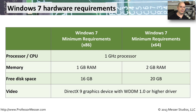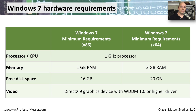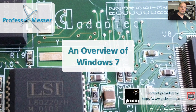The system requirements for Windows 7 differ slightly between 32-bit and 64-bit versions. Both require a 1 GHz processor. Memory requirements differ: 1 gigabyte minimum for 32-bit and 2 gigabytes for 64-bit. Storage requirements are 16 gigabytes free for a 32-bit install and 20 gigabytes for a 64-bit install. Video requirements are identical for both: a DirectX 9 graphics device with a Windows Display Driver Model (WDDM) version 1.0 driver.